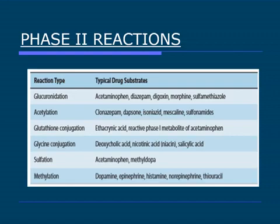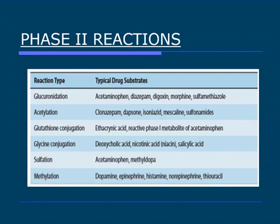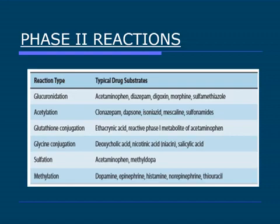Examples of drugs undergoing phase two reactions: acetaminophen, diazepam, and digoxin undergo glucuronidation to become more excretable. Isoniazid undergoes acetylation. An important point — the acetylating ability varies between individuals due to pharmacogenetics; some people are rapid acetylators and some are slow acetylators. Ethacrynic acid follows glutathione conjugation. Niacin and salicylic acid undergo glycine conjugation. Acetaminophen (paracetamol/panadol) undergoes sulfation. Dopamine, epinephrine, histamine, and norepinephrine undergo methylation.